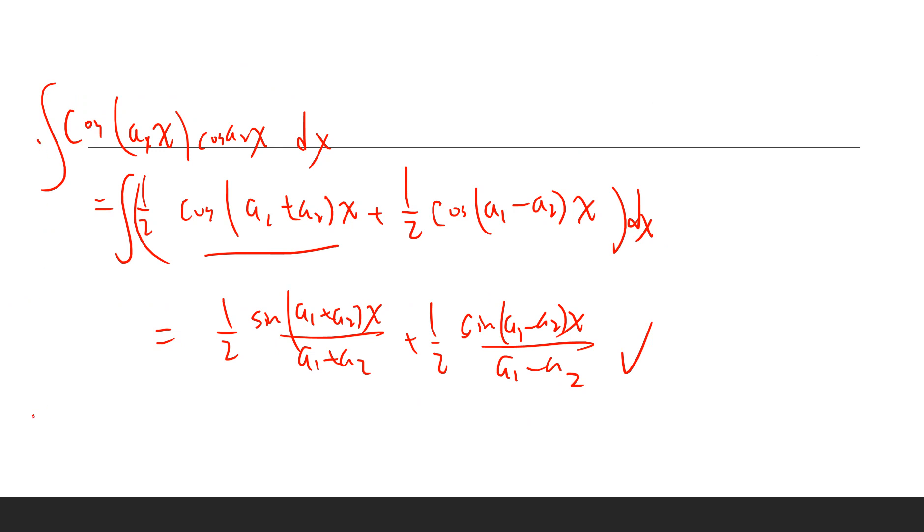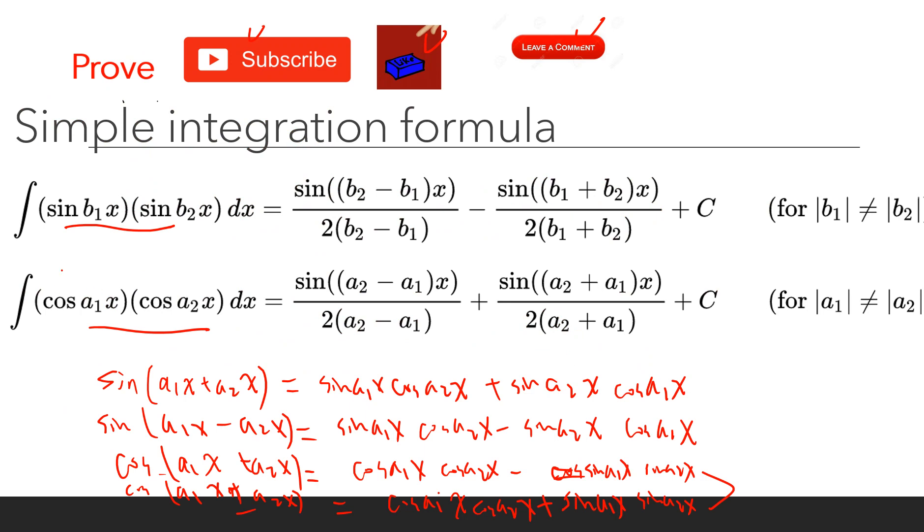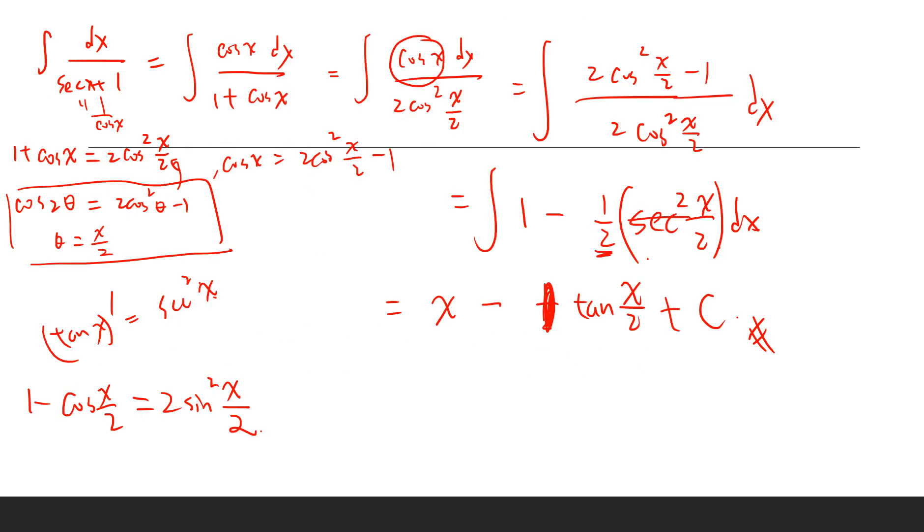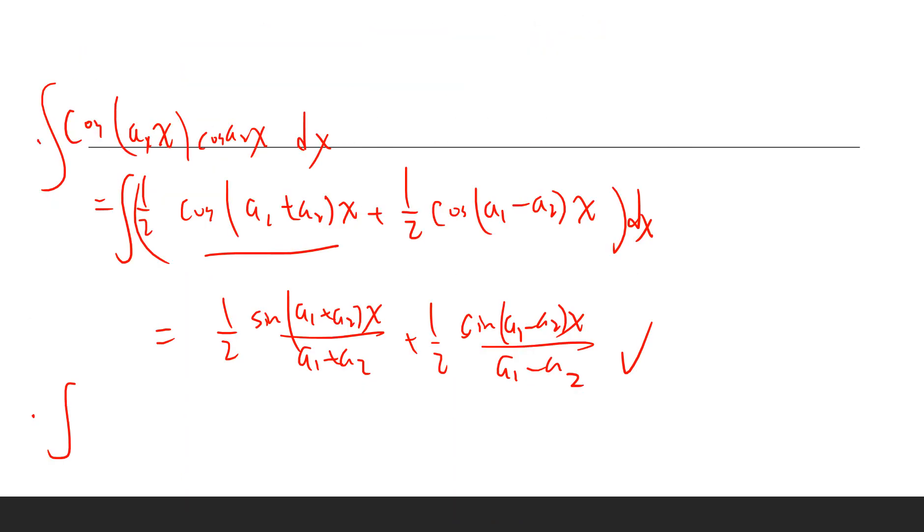The second one: we proved this one, and for this one it's also very easy because what we have is the same thing. We have sin(a1x)sin(a2x), it's exactly the same as this formula.